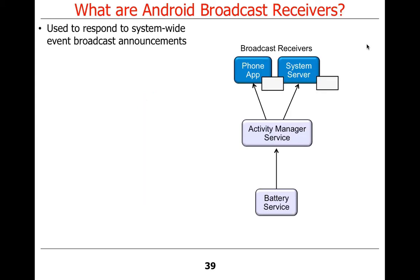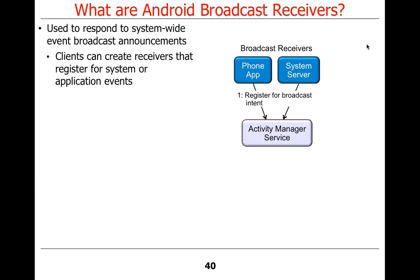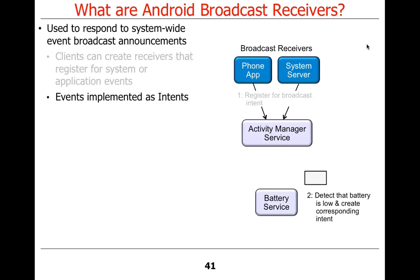Broadcast receivers are used to respond to system-wide event broadcast announcements. We'll talk more about it and show some examples. Clients can either dynamically or statically express receivers to handle these requests when they're broadcast in the system. There are several different types of events — application events and system events — and you can register either statically or dynamically for these intents to be sent to you. The events are implemented as intents, as you might expect.